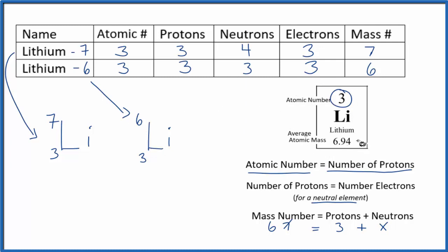You'll sometimes see it written like this to show the isotopes. The periodic table shows the weighted average of the isotopes. This is Dr. B with the number of protons, neutrons, electrons, and mass number for lithium — thanks for watching.